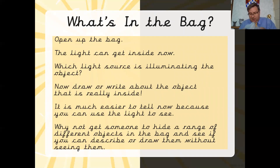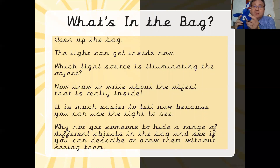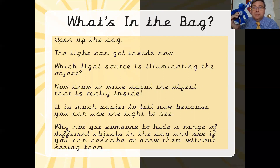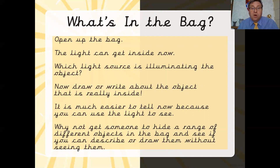When you open the bag up, light can now get inside and you can actually see the object. In my bag here, when I let light in, I can see that my object was a teddy bear - a nice Chelsea teddy bear! It's much easier to see when you open the bag and you actually have light. What you could now do is draw the object when you can actually see it. Why don't you try and get an adult or somebody else to hide two or three other different things into your bag and see if you can work out what they are just by feel alone, then draw or describe them - and see how much easier it is when you've actually got a source of light.